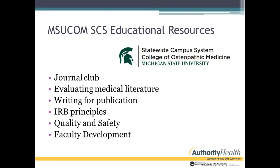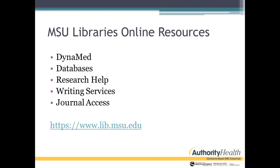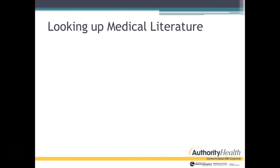Some of the educational resources available include: journal club resources, evaluating medical literature, writing for publication, IRB principles, quality and safety, and faculty development. The Spartan Medical Research Journal is a peer-reviewed journal — it's almost at the end of its second year, so we will have PubMed IDs at that time. With your faculty status, you also get access to the MSU libraries online, which includes Dynamed, other databases, research help, writing services, and journal access.